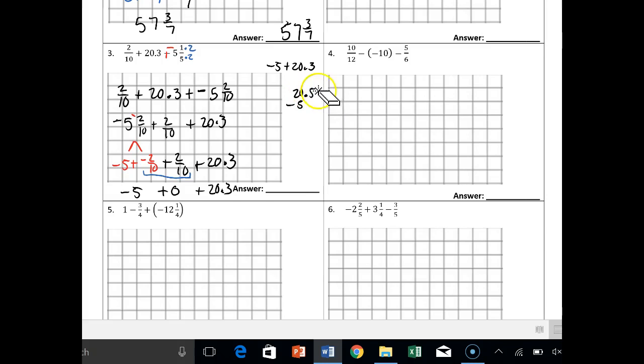So you actually do have to do the subtraction 20.3 minus 5. We're gonna have to borrow, so 3 minus nothing is 3, borrow here, it's a ones 10 minus 5 is 5, and we get positive 15.3 because we had more positives.